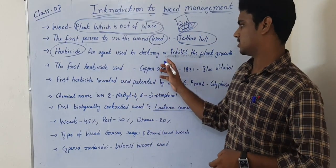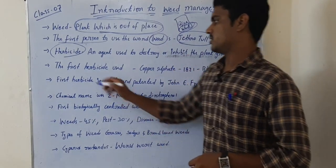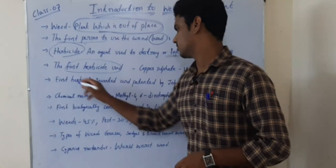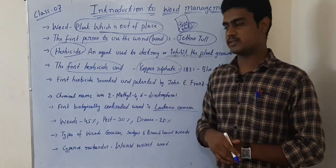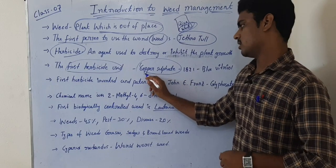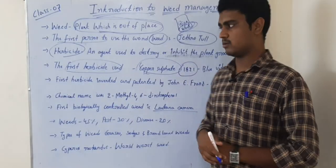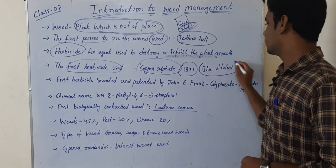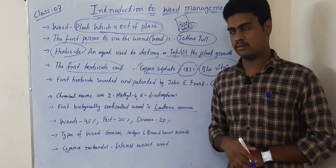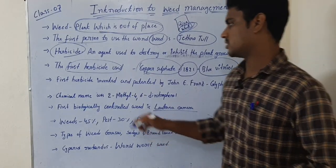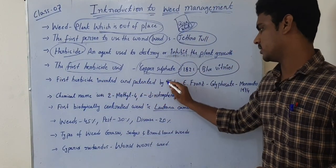The first herbicide used is copper sulfate — this is very important. The first herbicide which was used is copper sulfate, in the year 1821, known by the name blue vitriol.